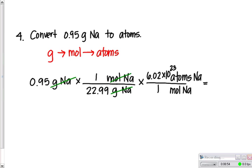Now, it's just a matter of putting it in our calculator and getting the answer. So, 0.95 times 6.02 times 10 to the 23rd, then divide by 22.99. Our final answer, with two significant digits, would be 2.5 times 10 to the 22nd atom of NA.